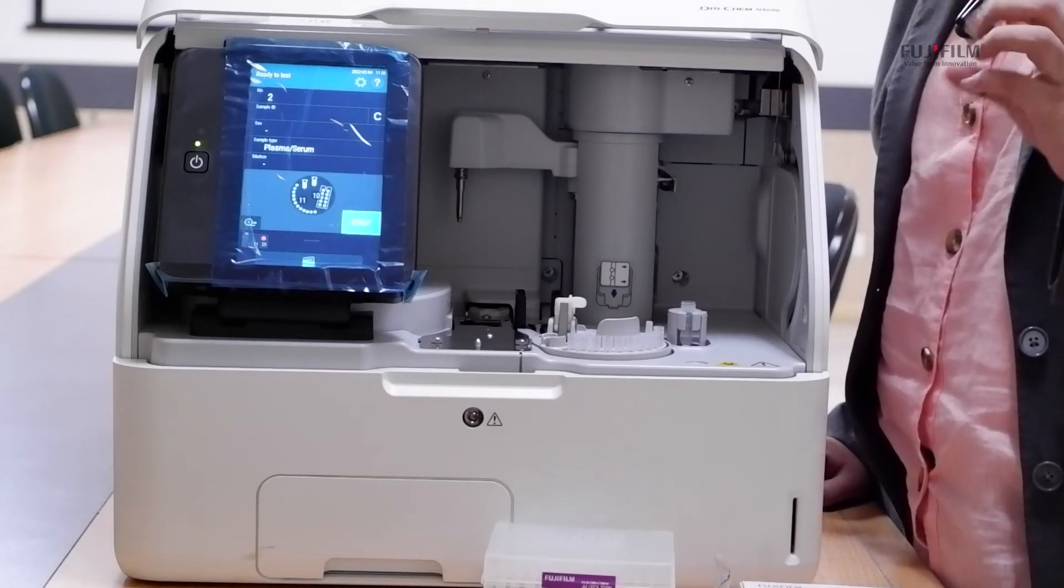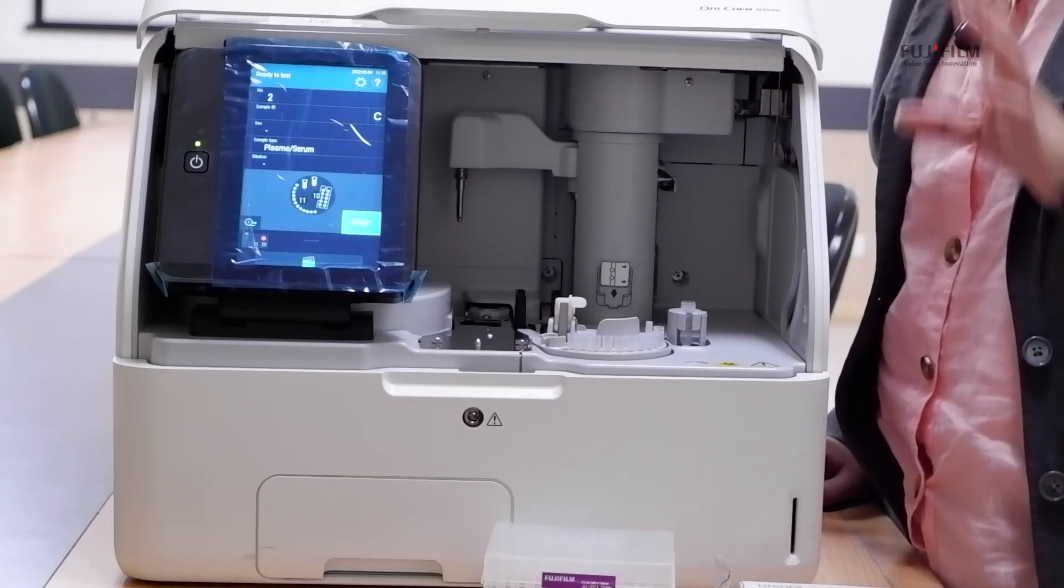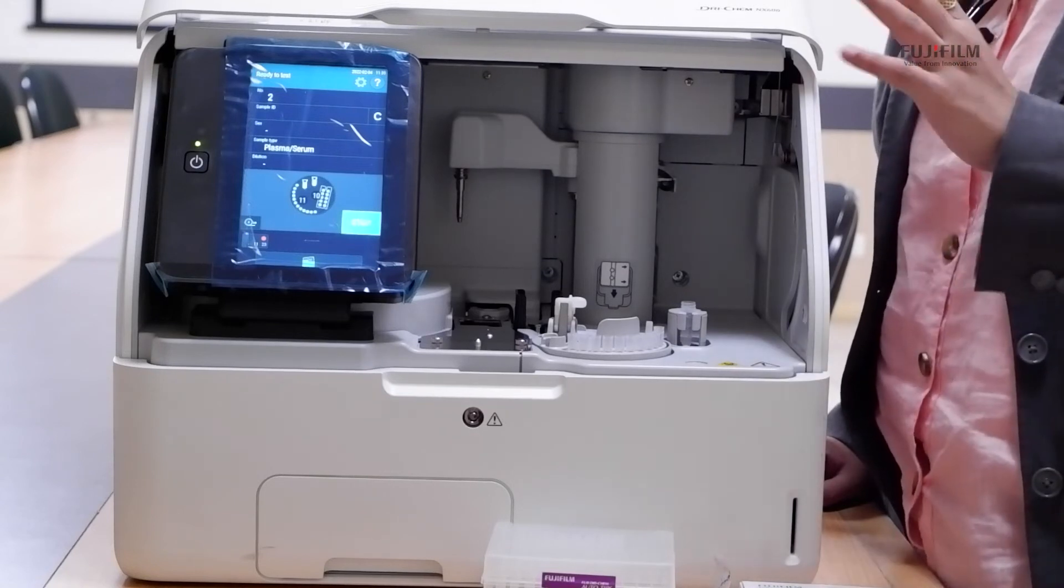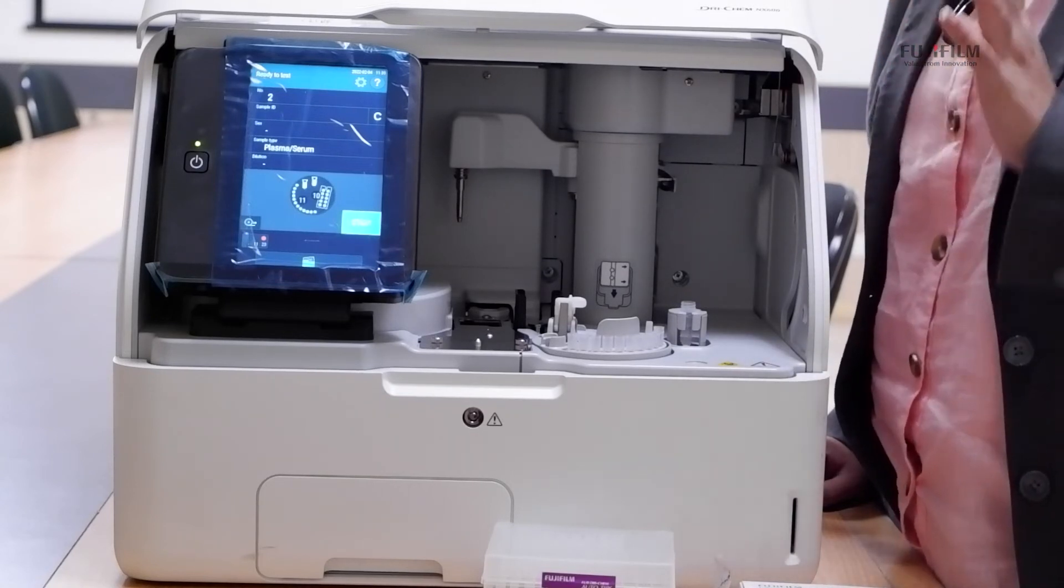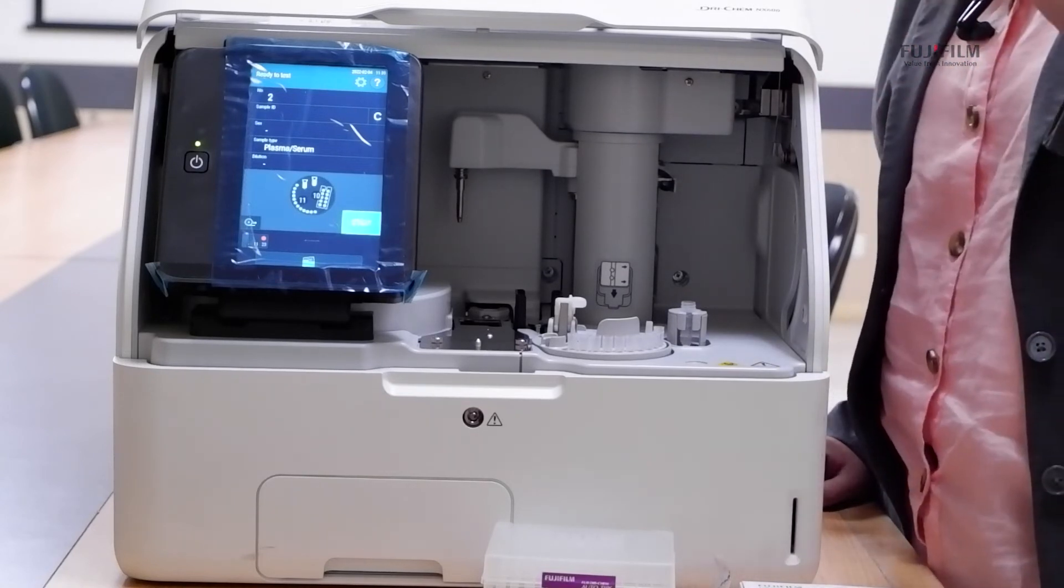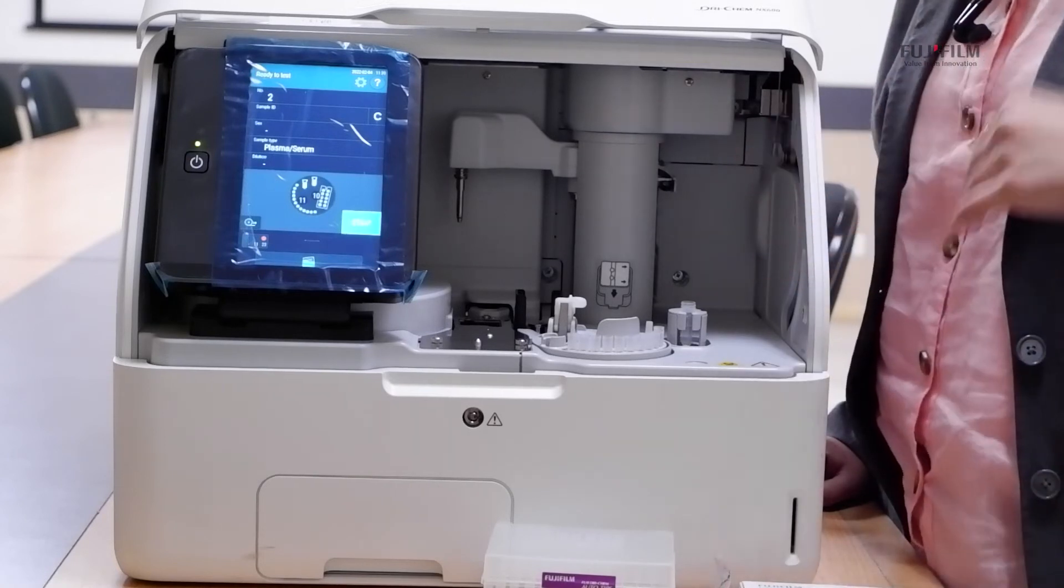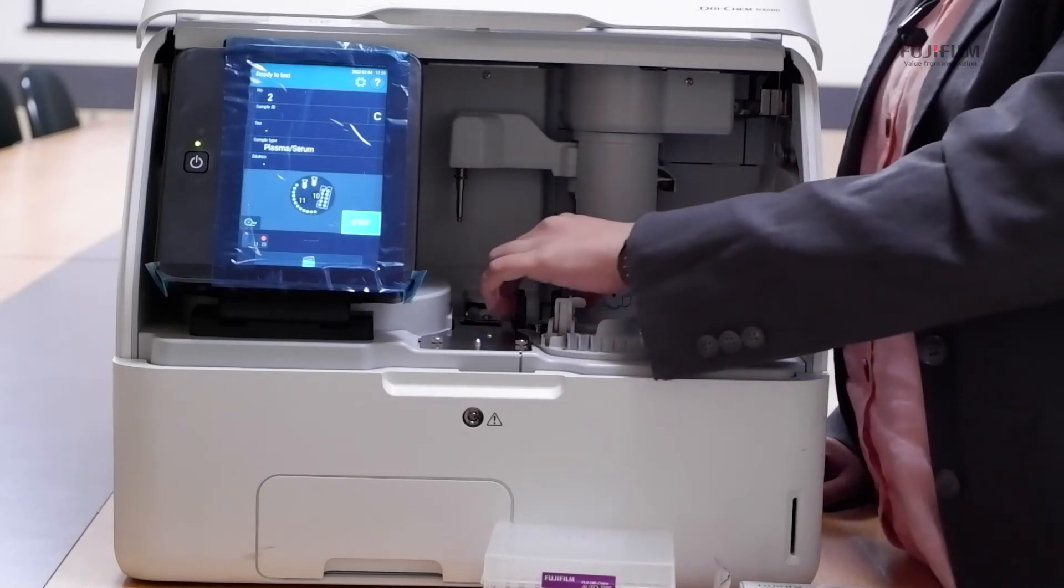The equipment has the function of continuous loading in which once the pipetting for one particular sample is completed, you can immediately start loading the next particular sample and hence it gives you a throughput of 128 tests per hour.